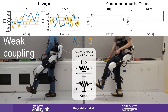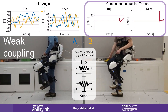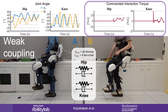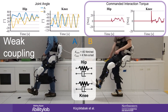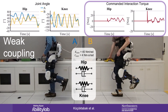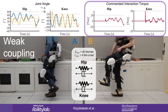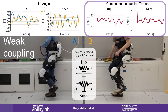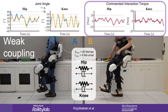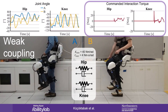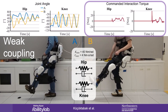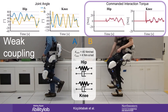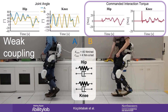The framework we've developed allows us to create virtual physical coupling between two exoskeletons. Here, we render weak spring and damper elements between the hip and knee joints of the users. Both users are still able to move independently, but can physically influence one another through the compliant virtual coupling. The interaction torque between the users changes depending on their states and the properties of the coupling.